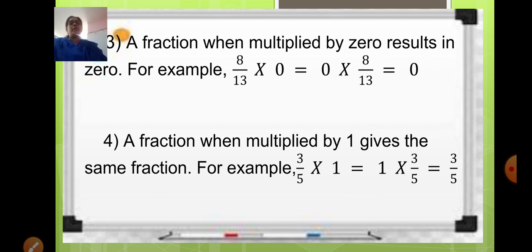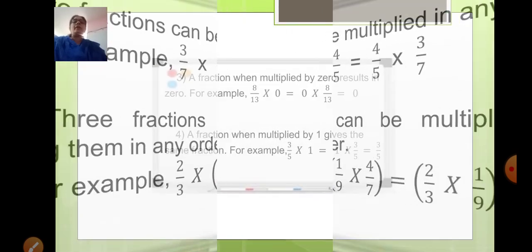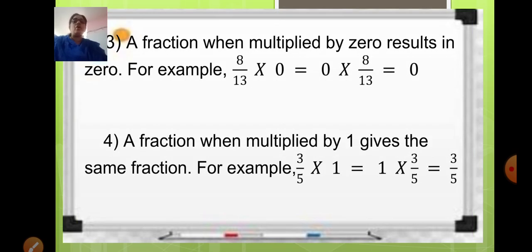So these are the four properties of multiplication of fractions. Let us revise: The first — two fractions can be multiplied in any order and the answer will remain the same. Second — three fractions, if you have to multiply, you can group them together in any order and then multiply, your answer will remain the same. Third — a fraction when multiplied by 0 will always result in 0. Fourth — a fraction when multiplied by 1 will give you the same fraction. Any fraction multiplied by 1, your answer will be the fraction itself.